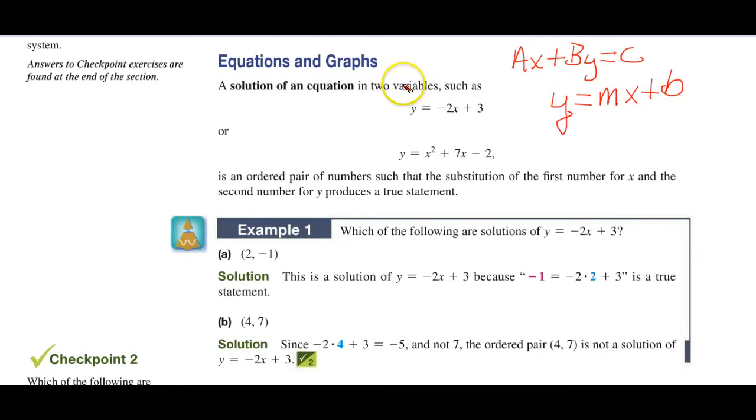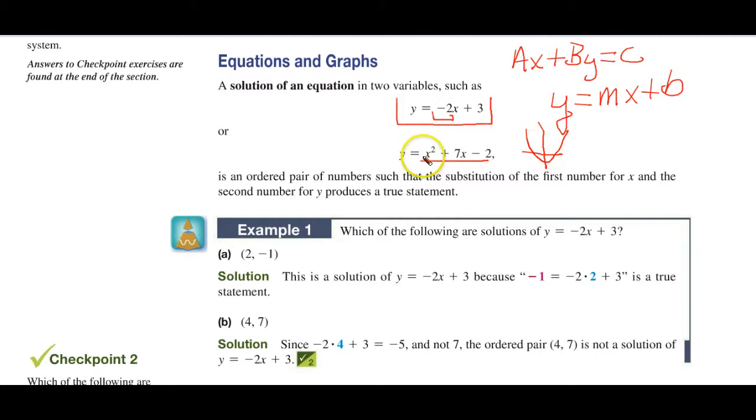In Math 1108, we will look at equations like this. This one is in slope-intercept form, where the slope is negative 2, and the y-intercept is a positive 3. That is a line, a straight line. We'll also be looking at equations like this, where we have y equals x to the second power. This is an example of a parabola and is not a straight line. We would say this equation is not linear. This one is linear.